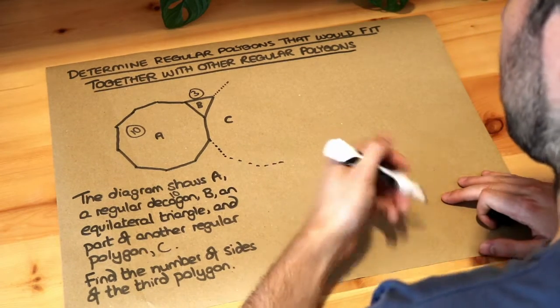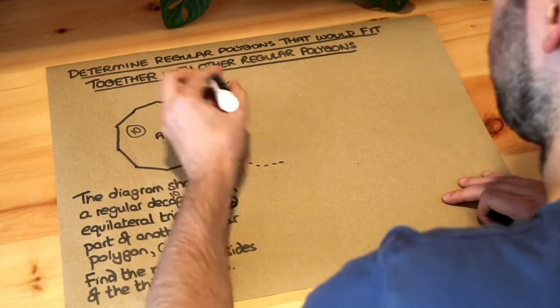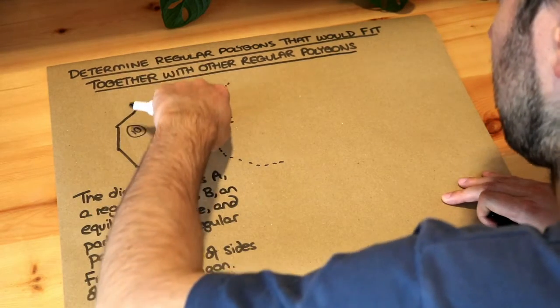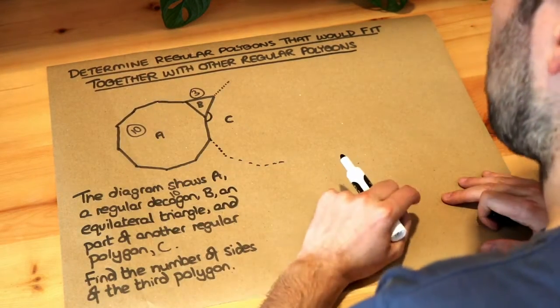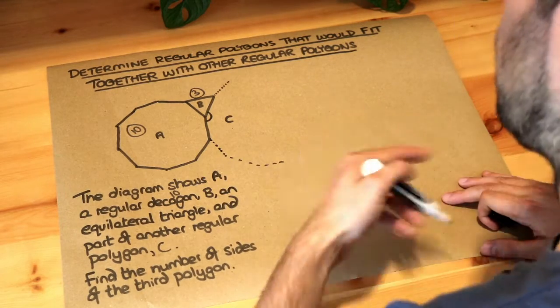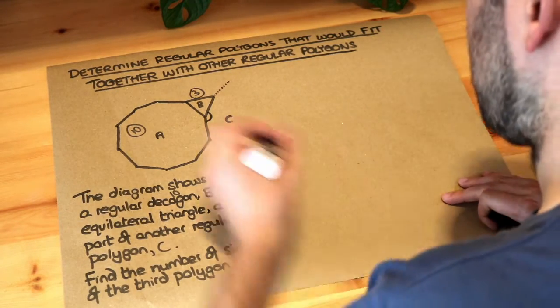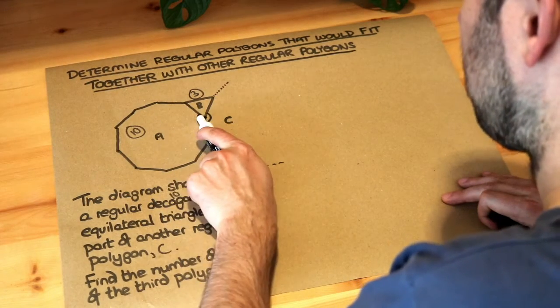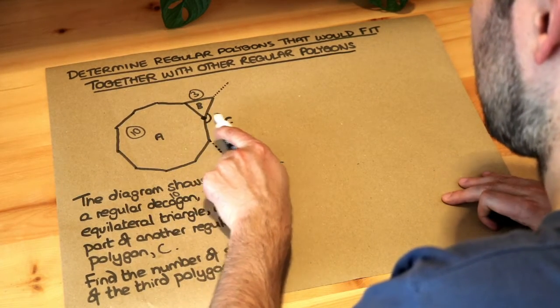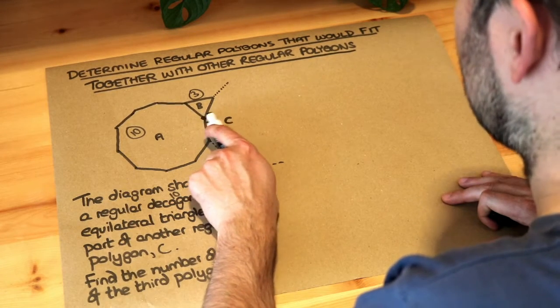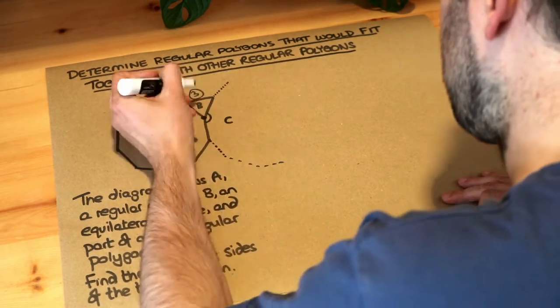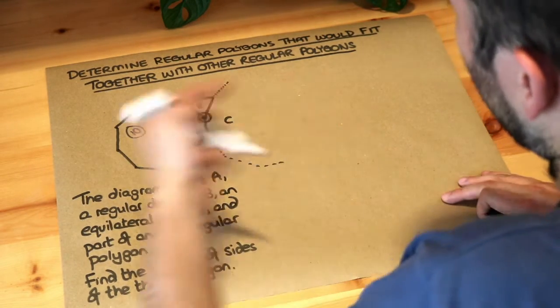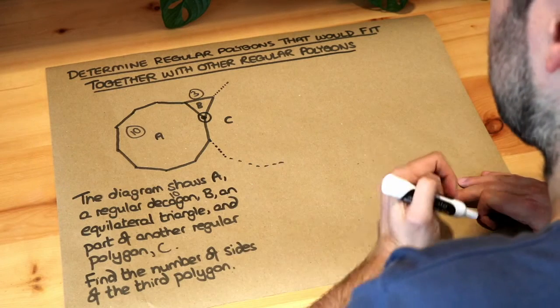Now we saw in a previous video that if we knew the interior angle of this regular polygon here, that's one interior angle, it's between this side of this polygon and this side of polygon C, then we can work out the number of sides it has. We also saw in a previous video that we have three polygons meeting at a point, so we've got this ten-sided polygon, the three-sided polygon, and this n-sided polygon. We don't know how many sides it has, but it's a regular polygon. We know that these three angles add to 360 degrees, so we can just put those two skills together and solve this problem.